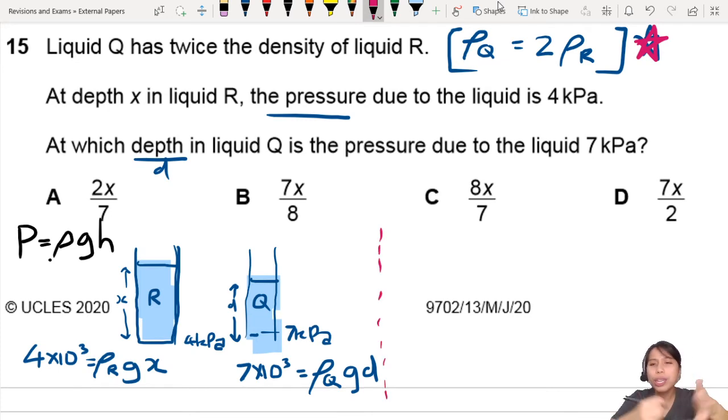We want to somehow relate both equations so that we can get some answer in terms of X. 99% of the time, if you have two equations, you have to relate them for some final expression. So let's use density of Q equals 2 density of R and equate them. So density of Q, we have to rearrange to express this. So that will be 7 times 10 to the 3 divided by GD.